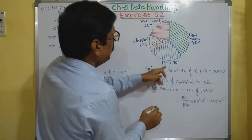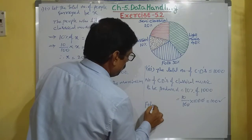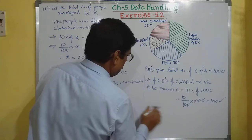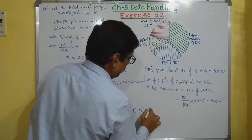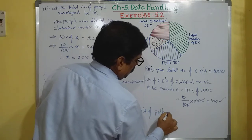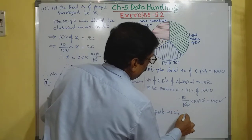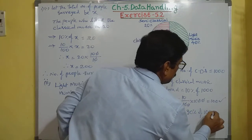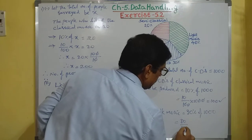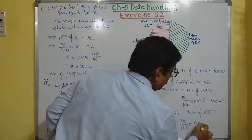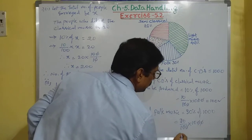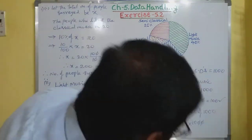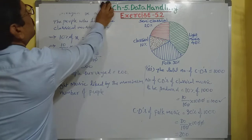For folk music, the percentage is 30%. So CDs of folk music equals 30% of 1000, that is 30/100 × 1000, which gives 300 CDs.